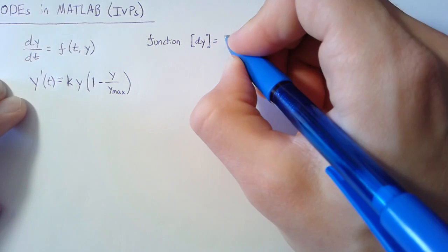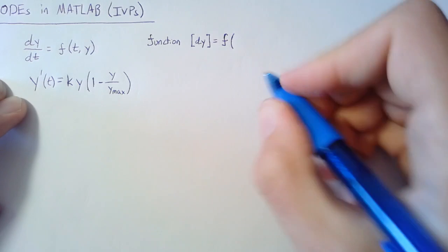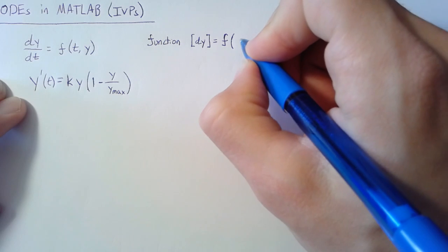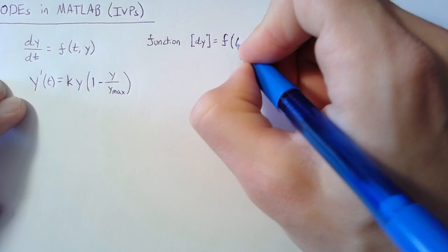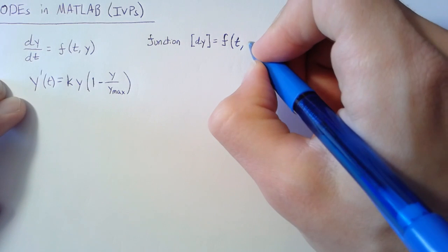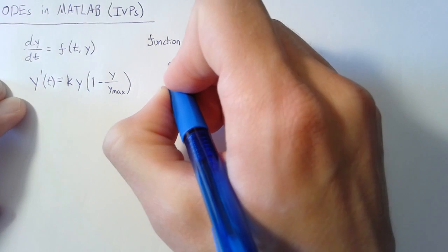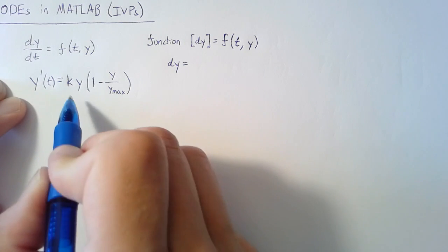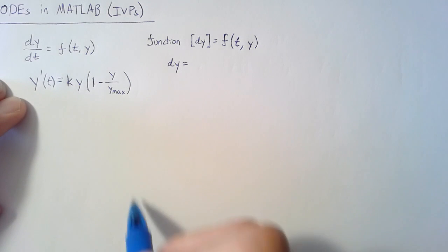We're going to name this function f, and it needs to be a function of both the independent and dependent variables. First always comes the independent variable t, followed by the dependent variable y. We're going to set dy equal to this equation, but we can't just put in k and y_max, we need to supply actual numbers.